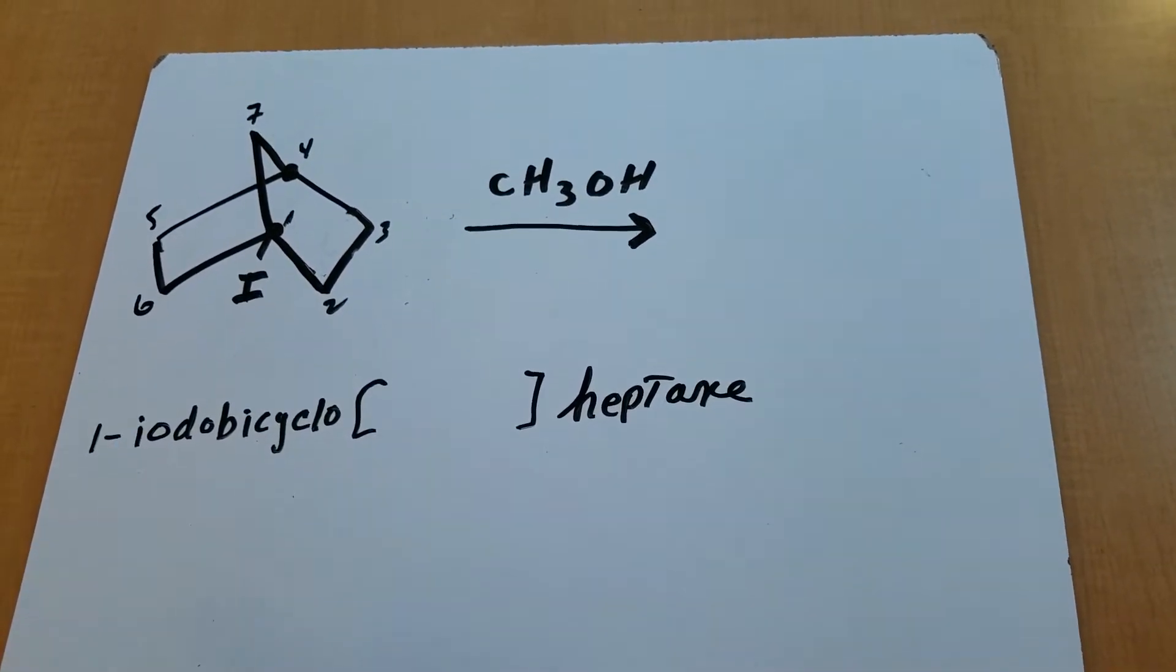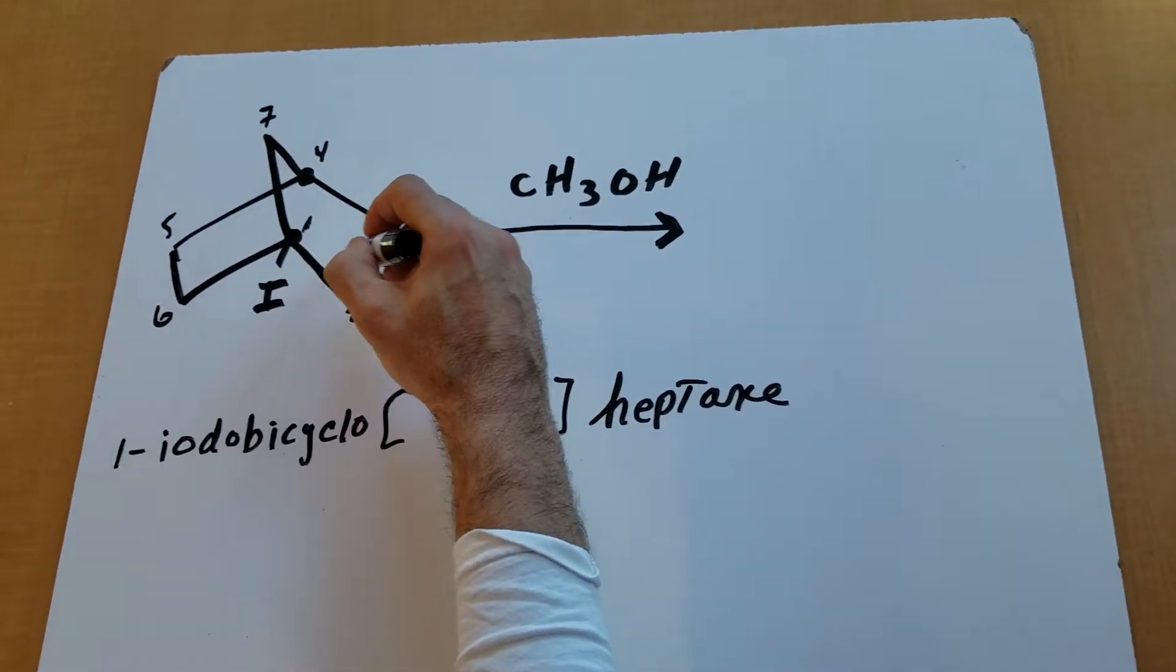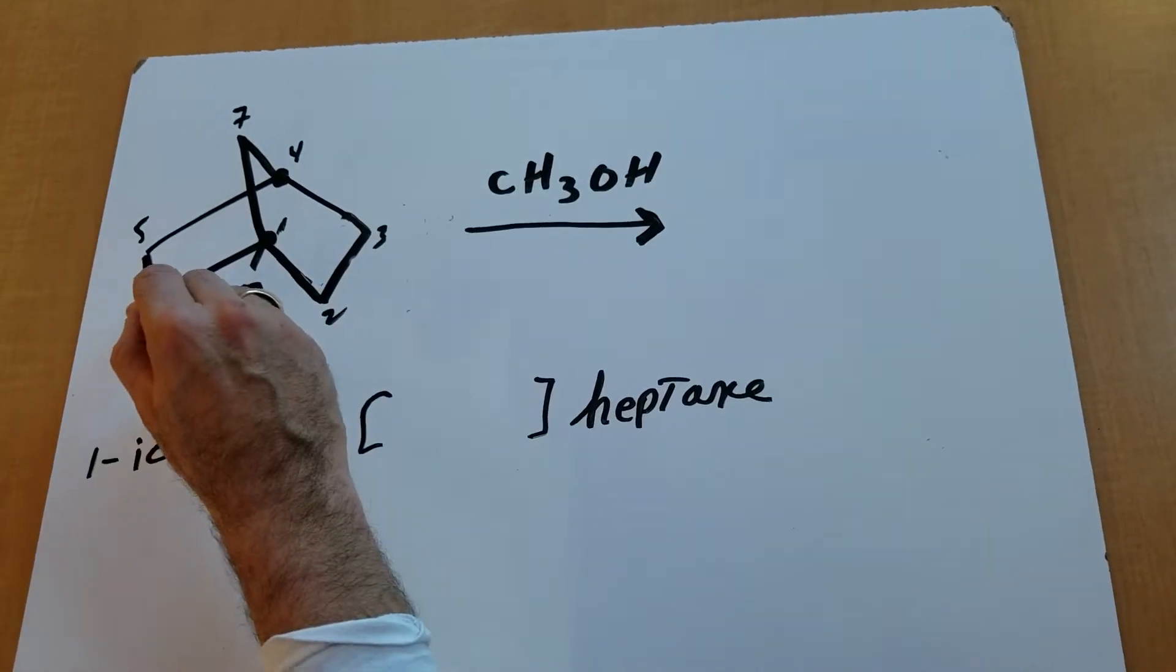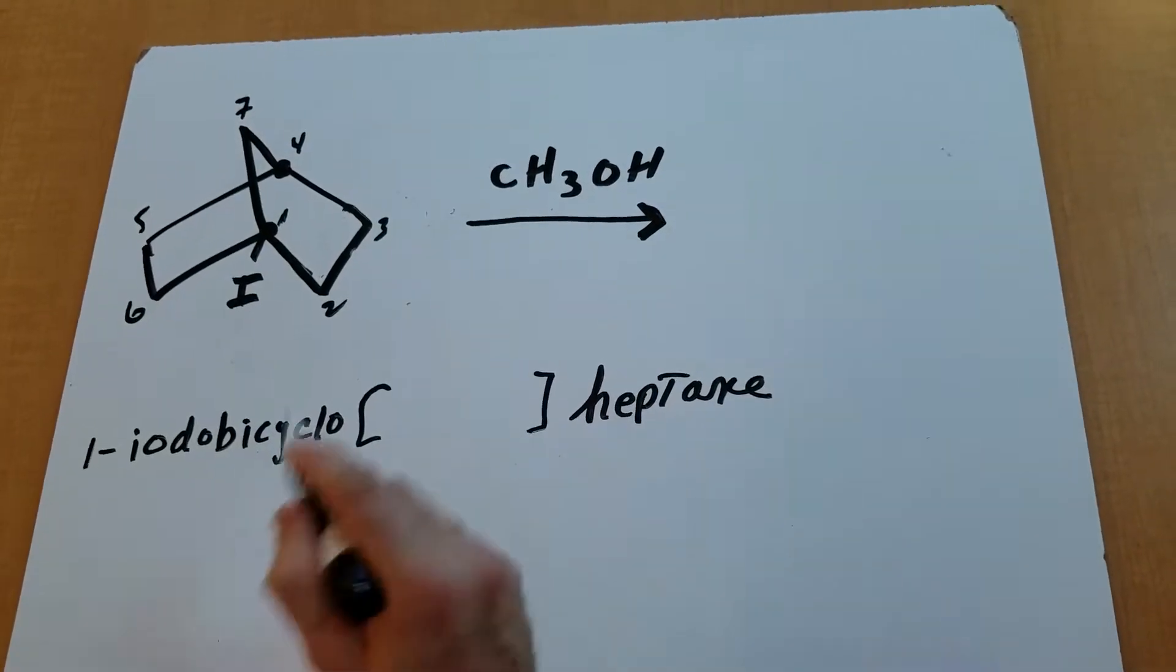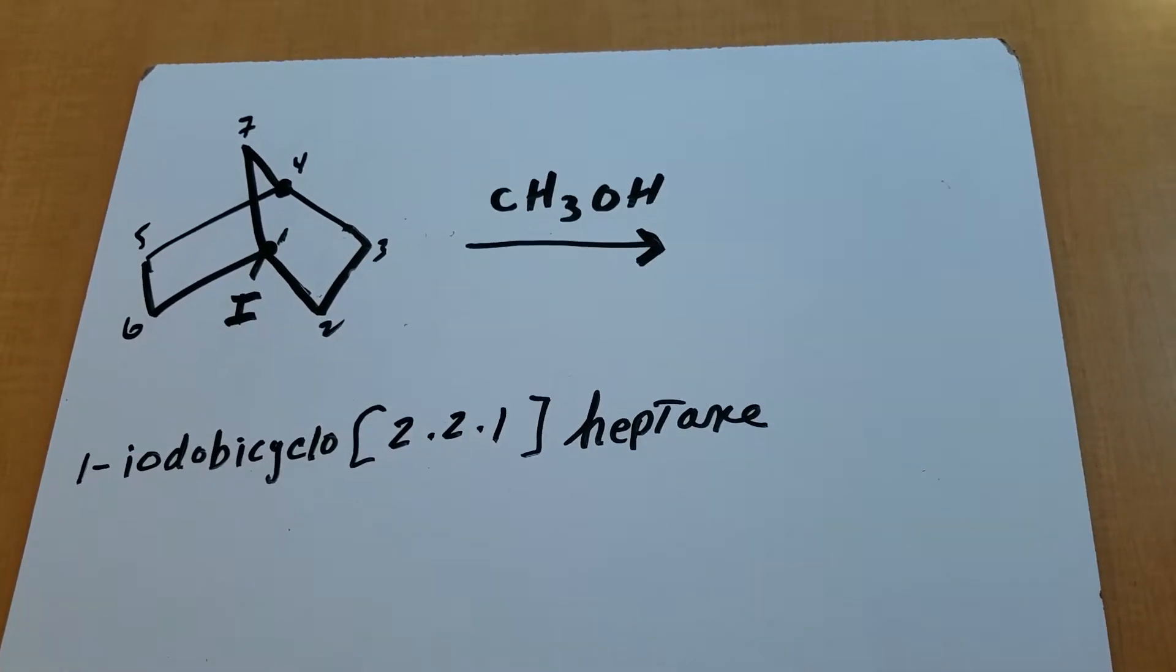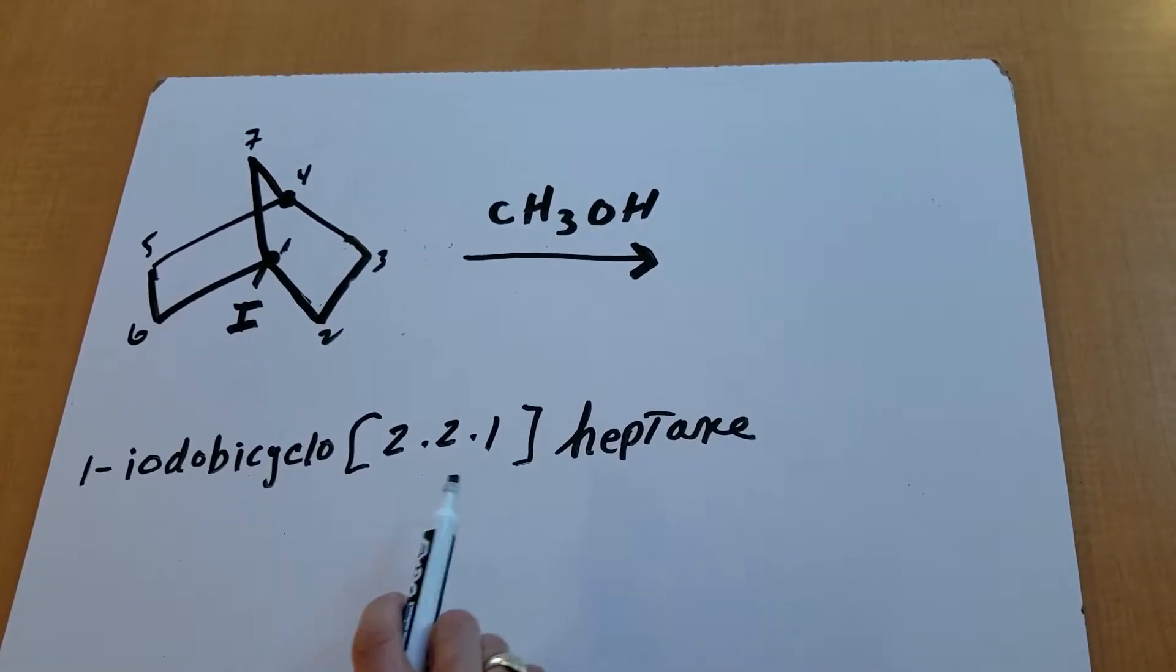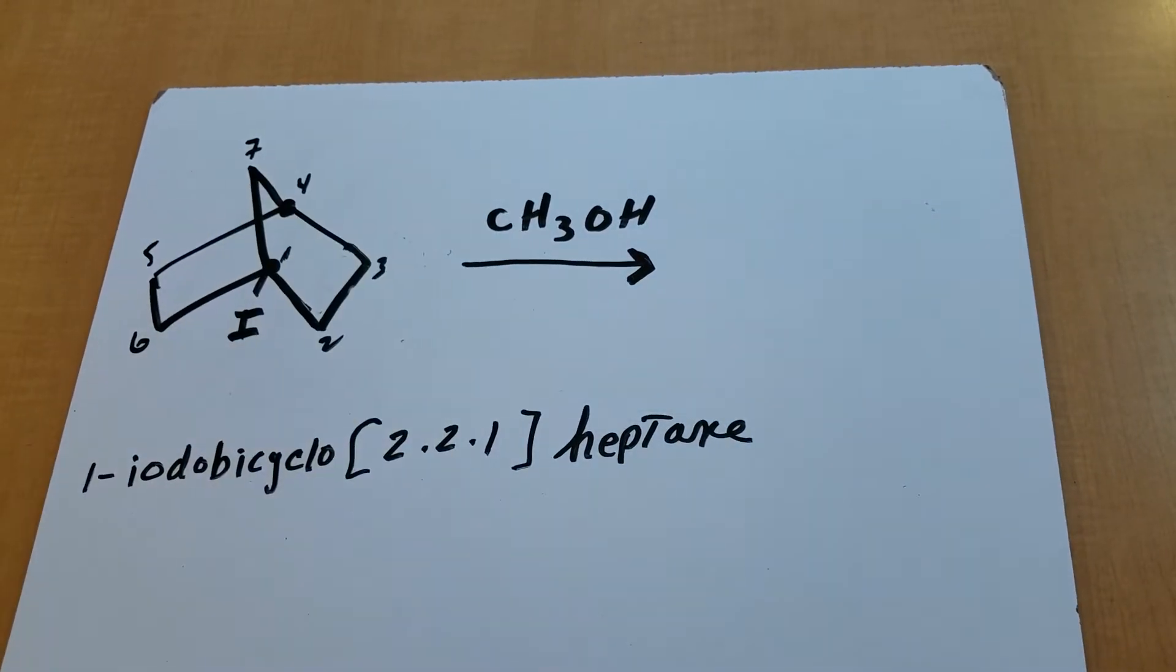So we have a one iodo bicyclo heptane. Now, if you look at the number of carbons between the two bridgeheads, if you go this path, there's two carbons. If you go this path, there's two carbons. And if you go up through this path, there's one carbon. So I would simply write this as one iodo bicyclo 2, 2, 1 heptane, where these numbers just tell you how many carbons are between the two bridgeheads.